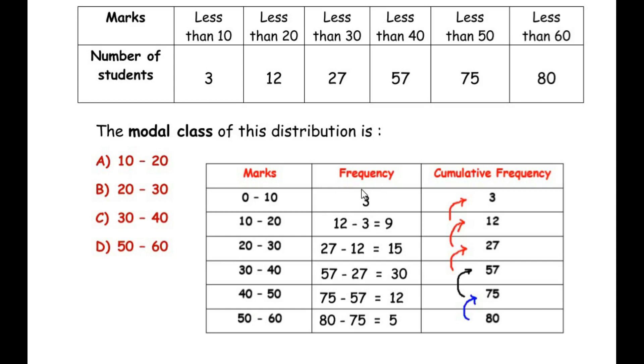Now once we have got this we have to focus on the frequency column. And now modal class is the class where the frequency is the highest. So if you look at the frequency we have the highest number as 30 and it belongs to the class or the marks 30 to 40. That means the modal class of this distribution is 30 to 40. So C is our answer. Now let us move on to the next question.